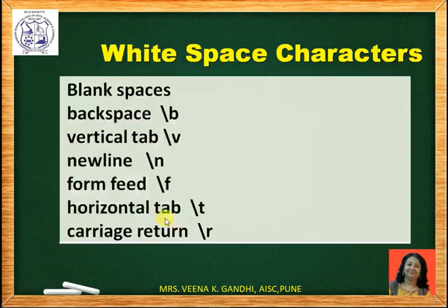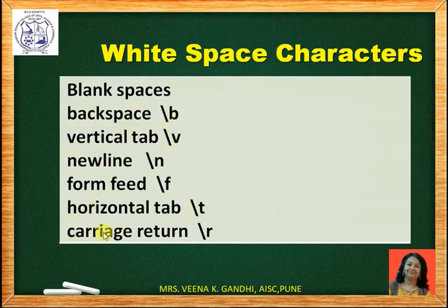Next are white space characters. In any language, blank spaces are there between two words. In the same manner, white space characters make the C program more readable. White space characters in C language are: blank spaces, backspace, vertical tab, new line, form feed, horizontal tab, and carriage return.